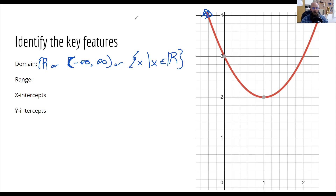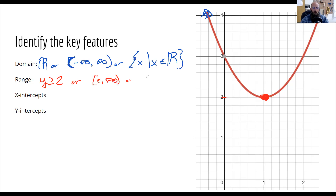The next thing I want to look at is my range. The range is my y values, and it's not all real values. I'm starting right down here at two, and it goes up from there, so it's greater than or equal to two. So this is going to be y is greater than or equal to two. Or it's a solid bracket at two and then up to infinity with a parentheses on the infinity — it's always a parentheses on infinity. Or I could write that my y values such that y is greater than or equal to two.